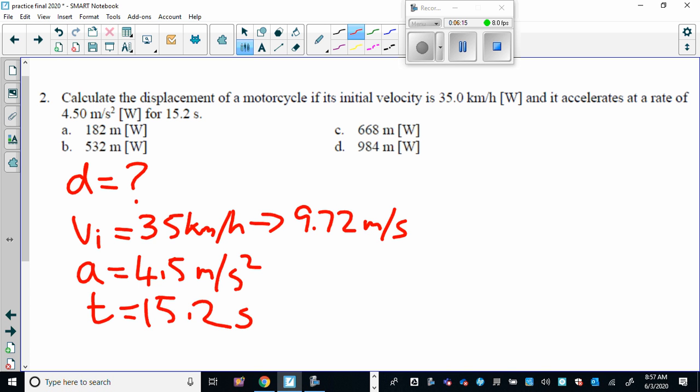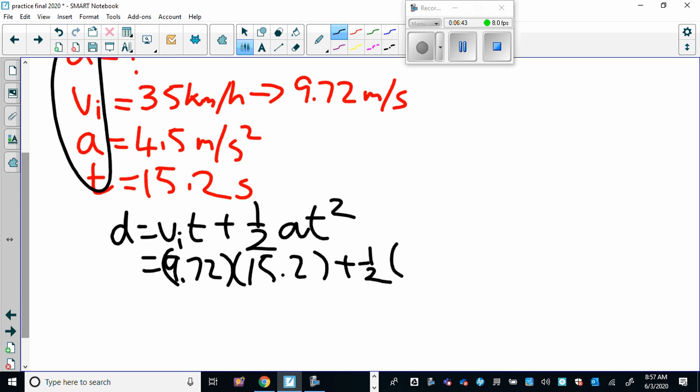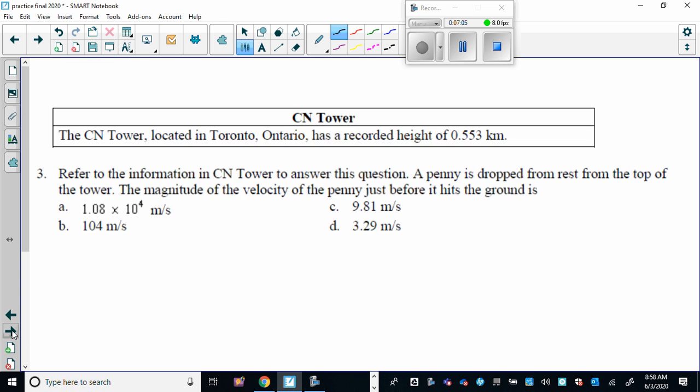So this is a straightforward kinematics question. You go to your formula sheet, you find the formula that has these four variables in it. And that formula turns out to be this here. And then it's just a matter of plugging in the numbers and putting it into your calculator correctly. Don't forget to square it. That's a common mistake. Stick all that into the calculator and you're going to end up with an answer of 668 meters.